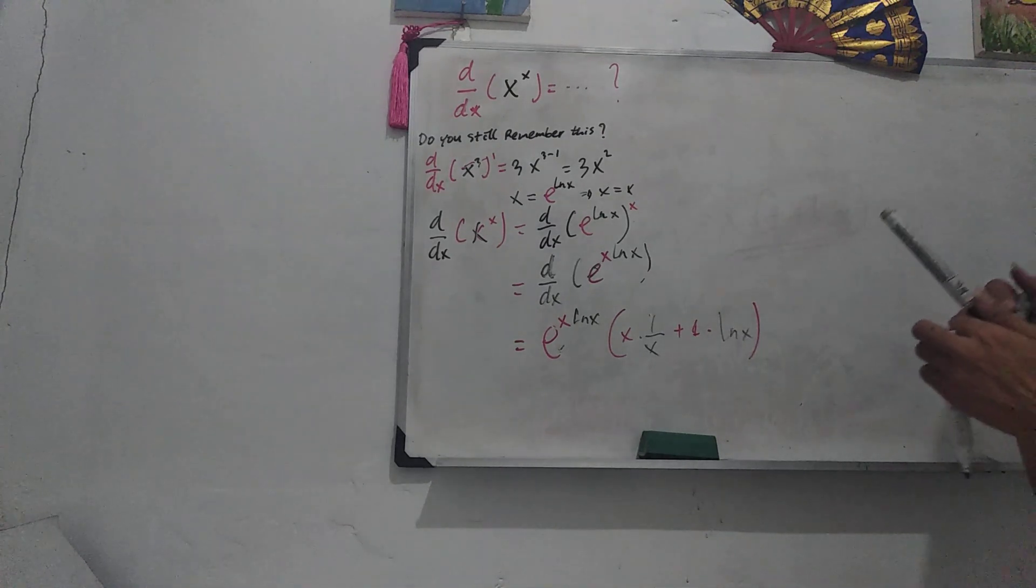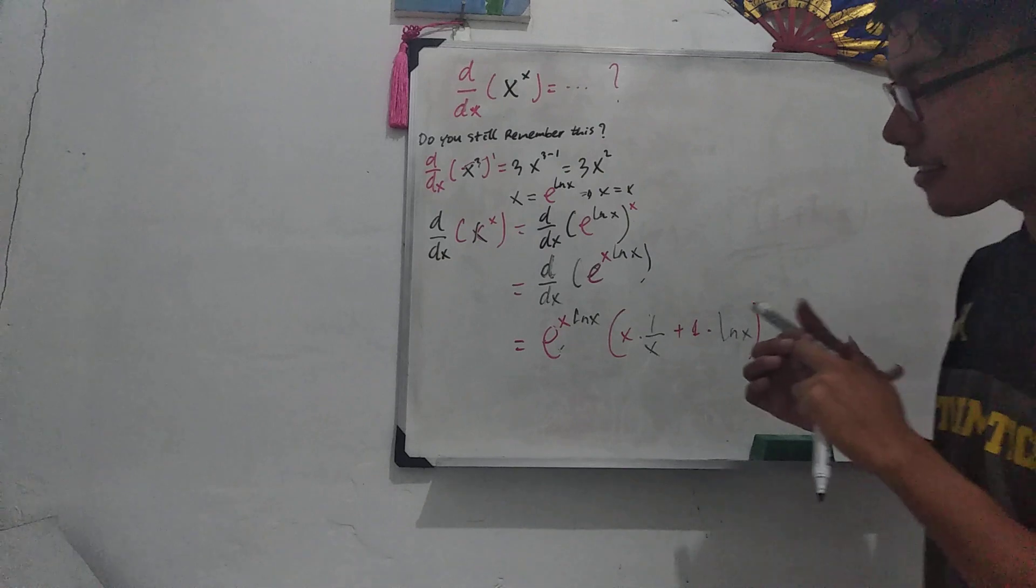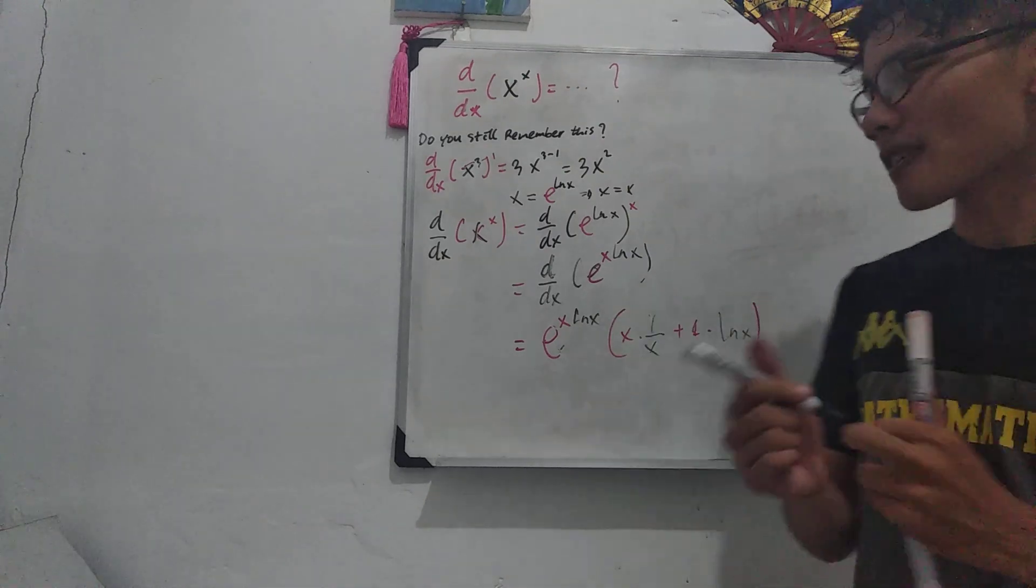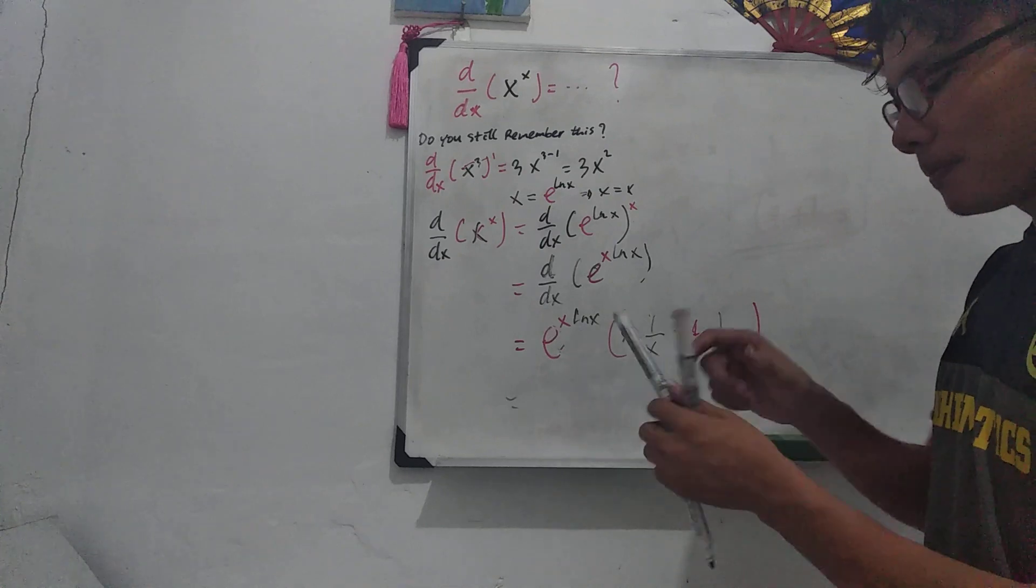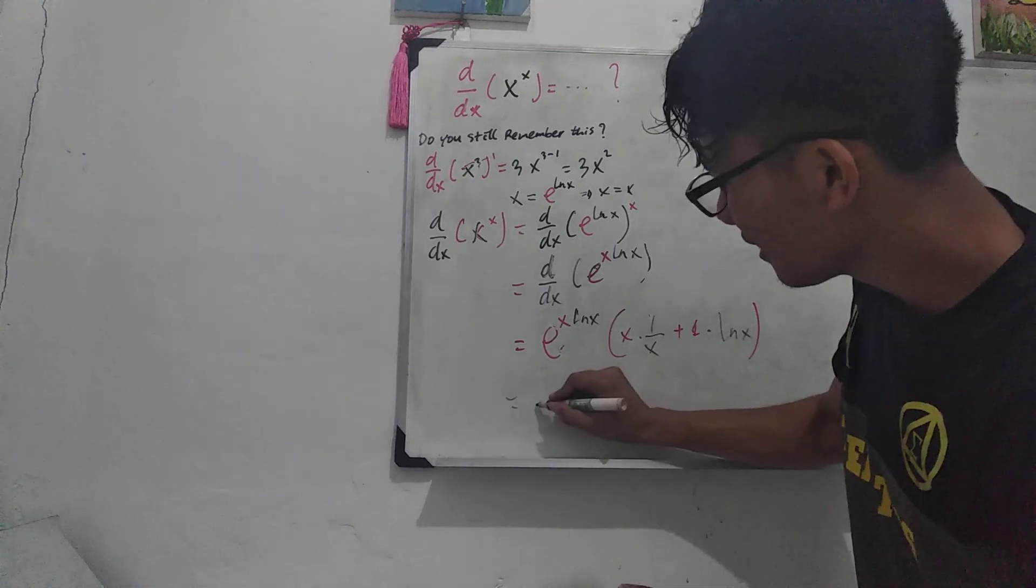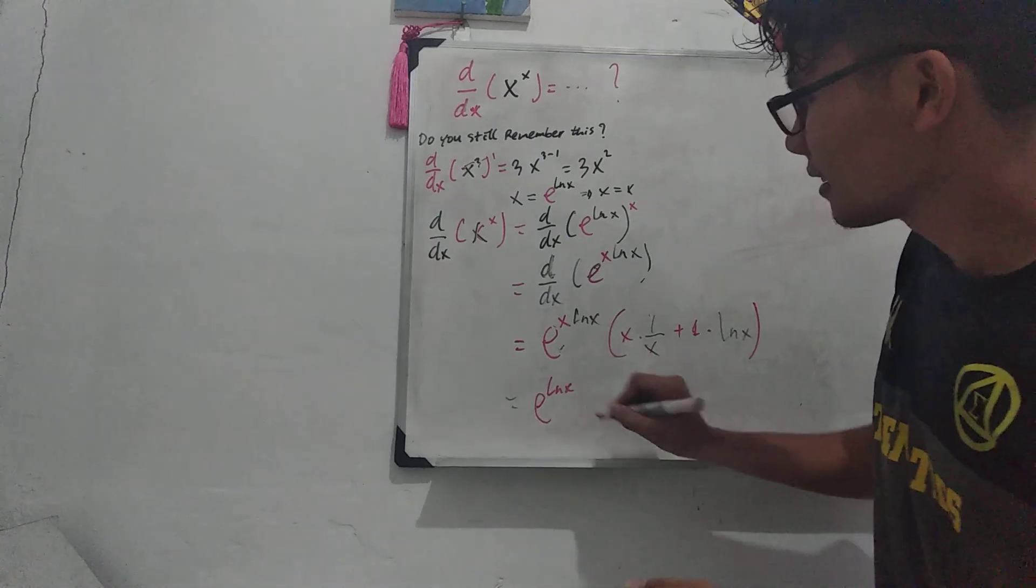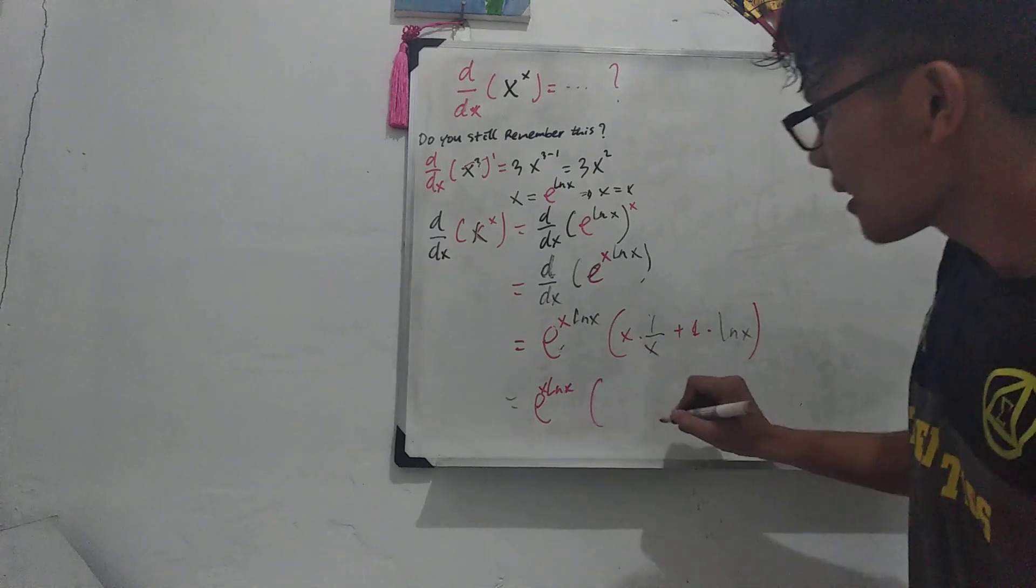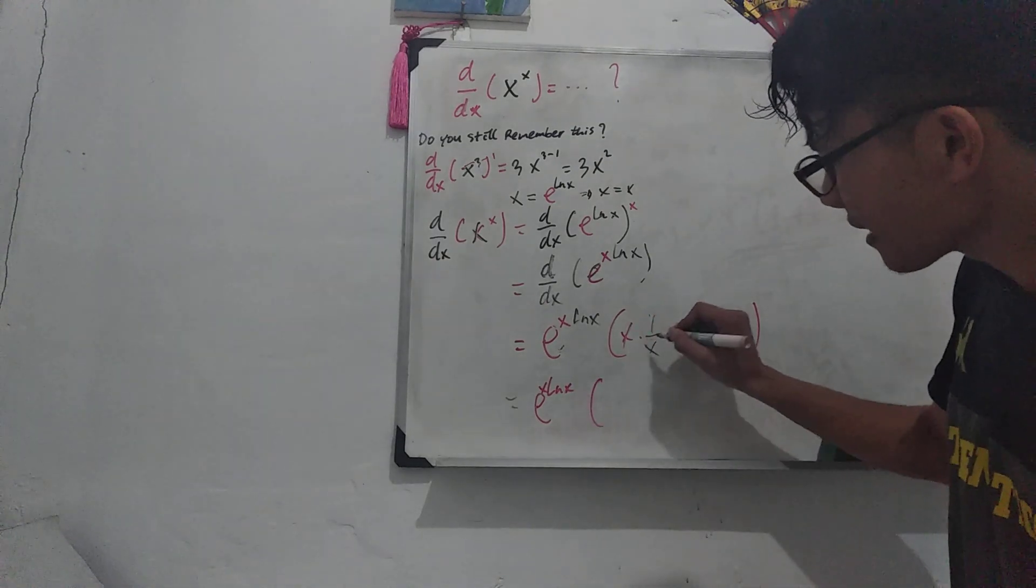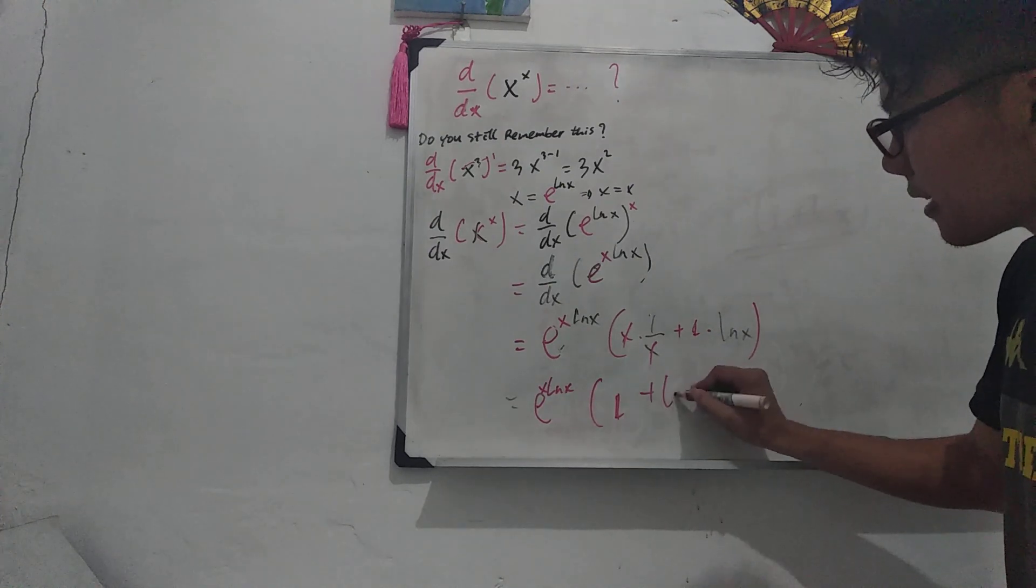Okay, so that's the solution. But what we know in mathematics, we need to simplify it, right? Okay, so let's do it. So it's gonna be e to the power of x ln x here, times, it's gonna be cancel, I can cancel it, right? It's gonna be 1 plus ln x.